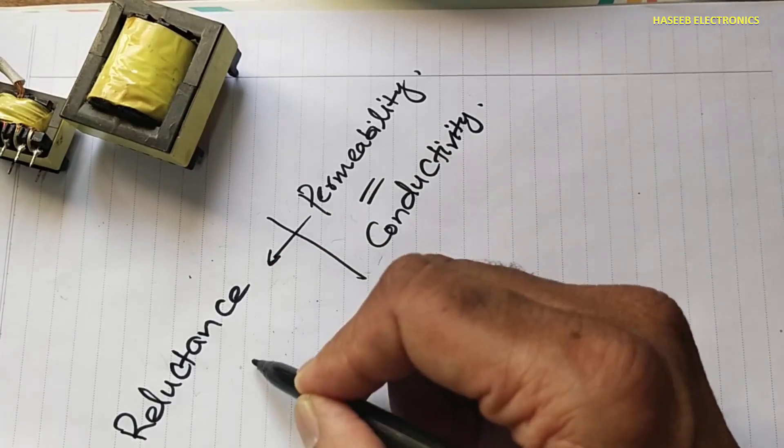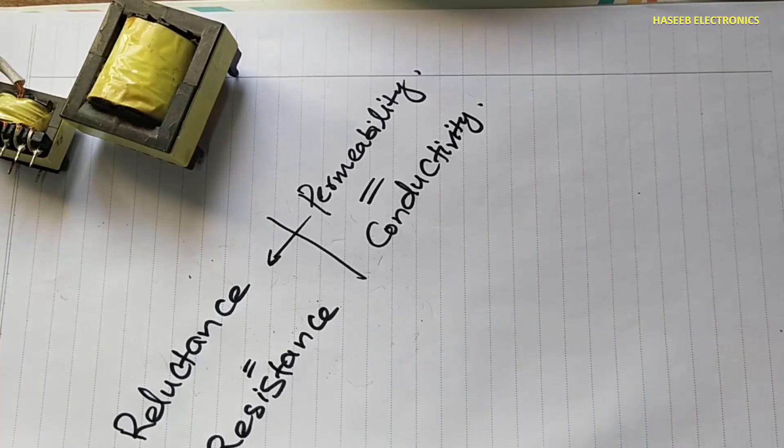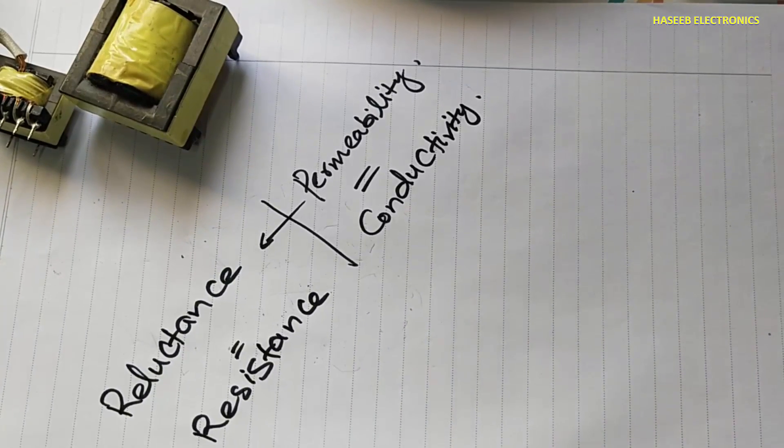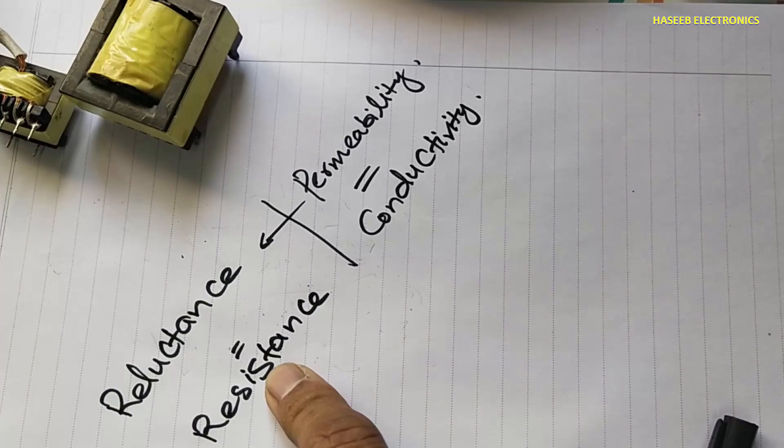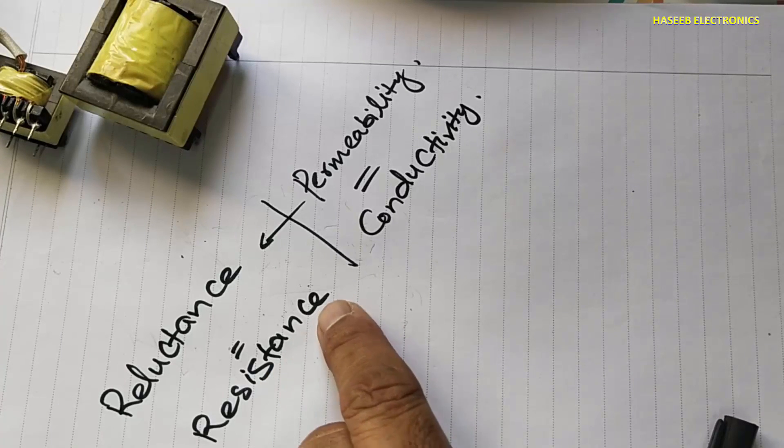In electronics, it is called resistance. When we say resistance, it means any material when we apply electrical current to that material, how much resistance will be provided to this flow of current.